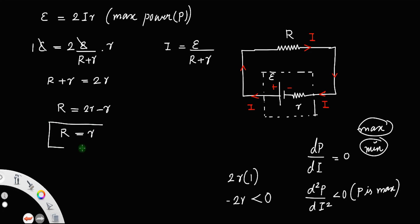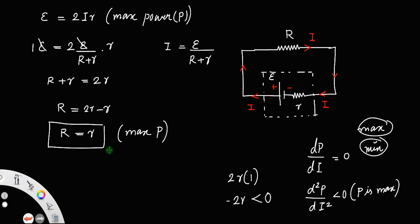This is the condition for maximum power: when the external resistance R is numerically equal to the internal resistance r, the power taken by the resistor is maximum, meaning maximum power is drawn from the cell.